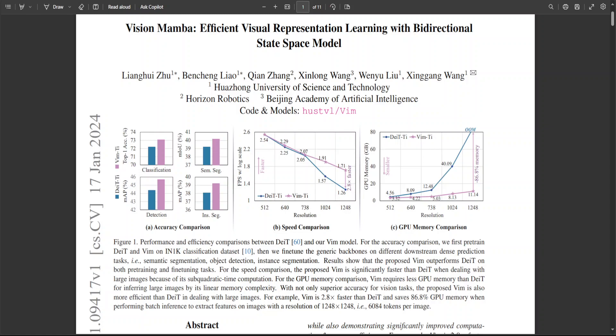If we go into more detail, we realized that these state space models or SSMs with efficient hardware design that is Mamba have shown great potential for long sequence modeling and that is where they shine. Building efficient and generic vision backbone purely upon SSMs is an appealing direction. And that is where this bi-directional VIM or Mamba vision shines.